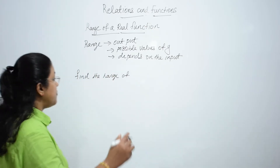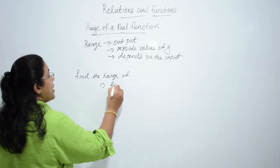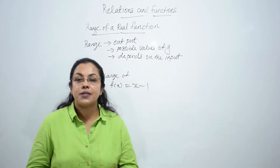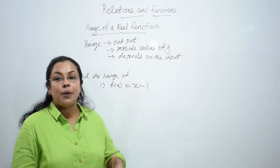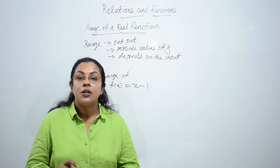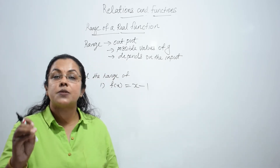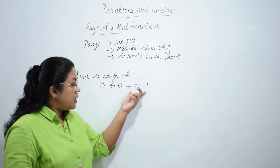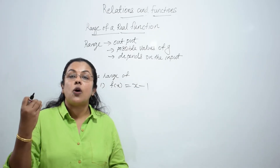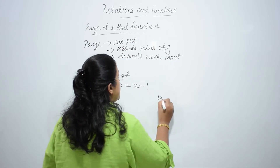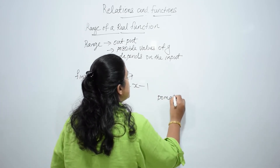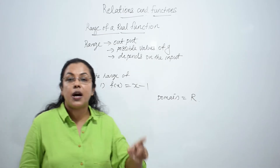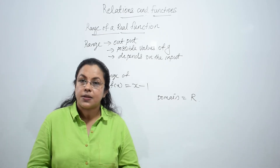First, find the range of f(x) = x minus 1. We know the domain of this function. Domain means those values of x for which f(x) is defined or real. Here, f(x) is real for all values of x, so its domain is nothing but the set of real numbers.